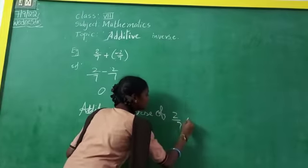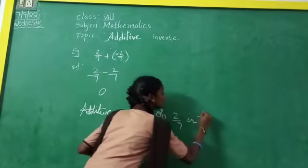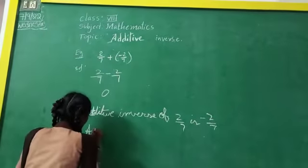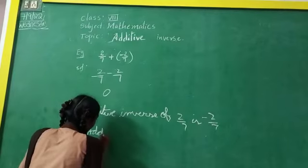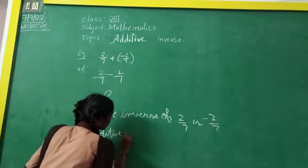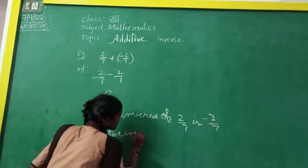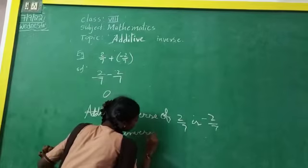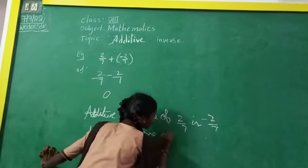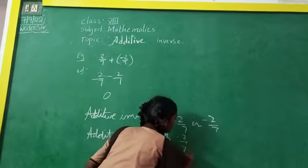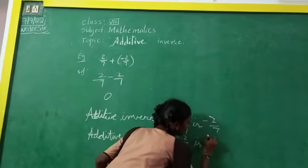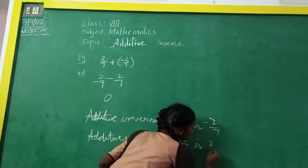...is minus 2 by 7. Edito-Inverse of minus 2 by 7 is 2 by 7.